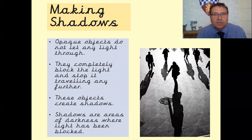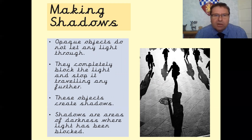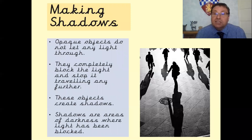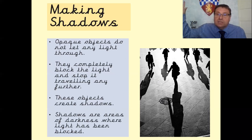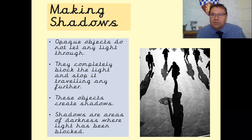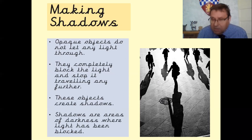Now moving on to look at shadows. Opaque objects do not let any light through — they completely block the light and stop it travelling any further. These objects create shadows. When you're outside on a bright sunny day you can see your shadow, because the light source is the sun and it shines on you, and you're blocking the light from the pavement or playground below you. So shadows are areas of darkness where the light has been blocked.